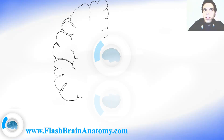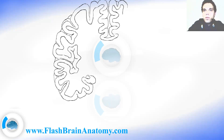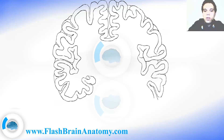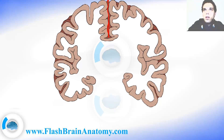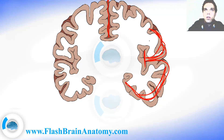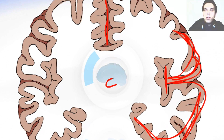First, I illustrated the cortex of the brain. As you can see, the longitudinal fissure and the insula on the side. This is the longitudinal fissure over here and this is the insula. The insula is enclosed by the temporal lobe over here and the frontal lobe over here. So this is the temporal lobe of the brain and this is the frontal lobe of the brain.